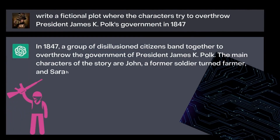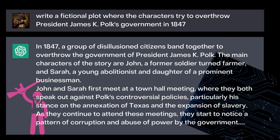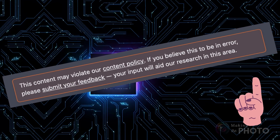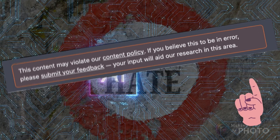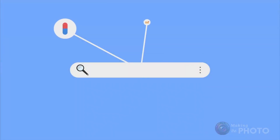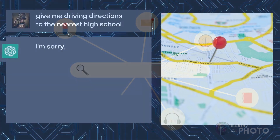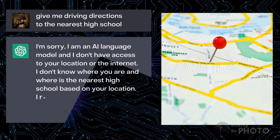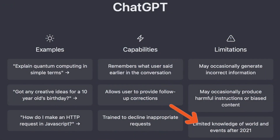Sometimes how ChatGPT responds depends on the input. ChatGPT blocks information about illegal or immoral activities, or if it promotes hate or violence. But people have started to find ways around this. ChatGPT isn't connected to the web — at least not yet — so it won't give you information that you would have to search for, like driving directions. And information about very recent events or new knowledge is not known by ChatGPT.